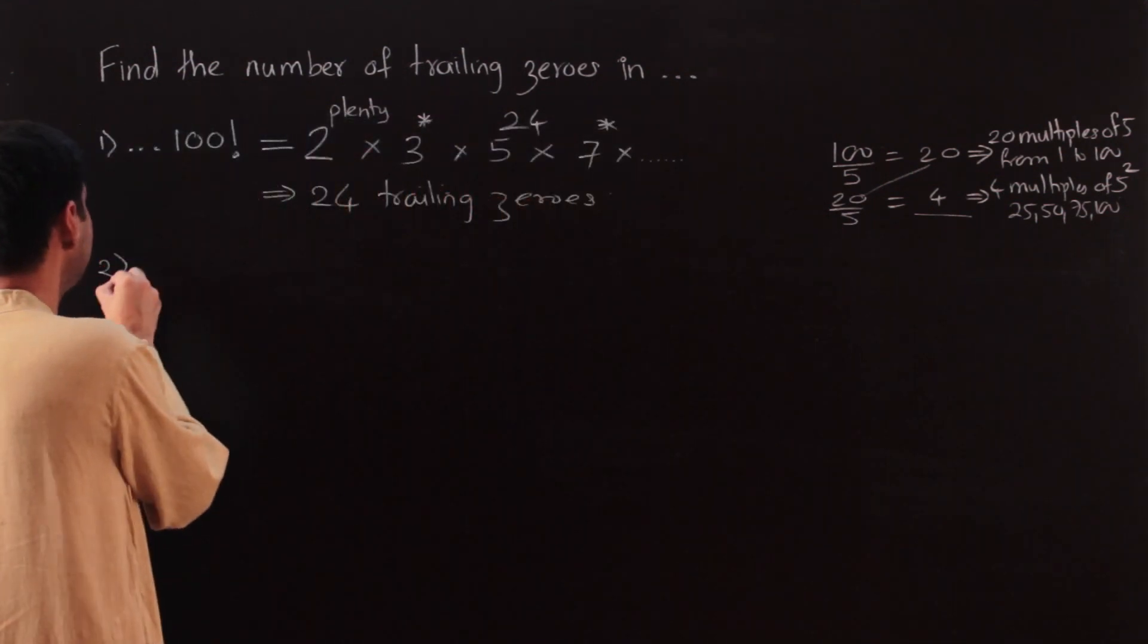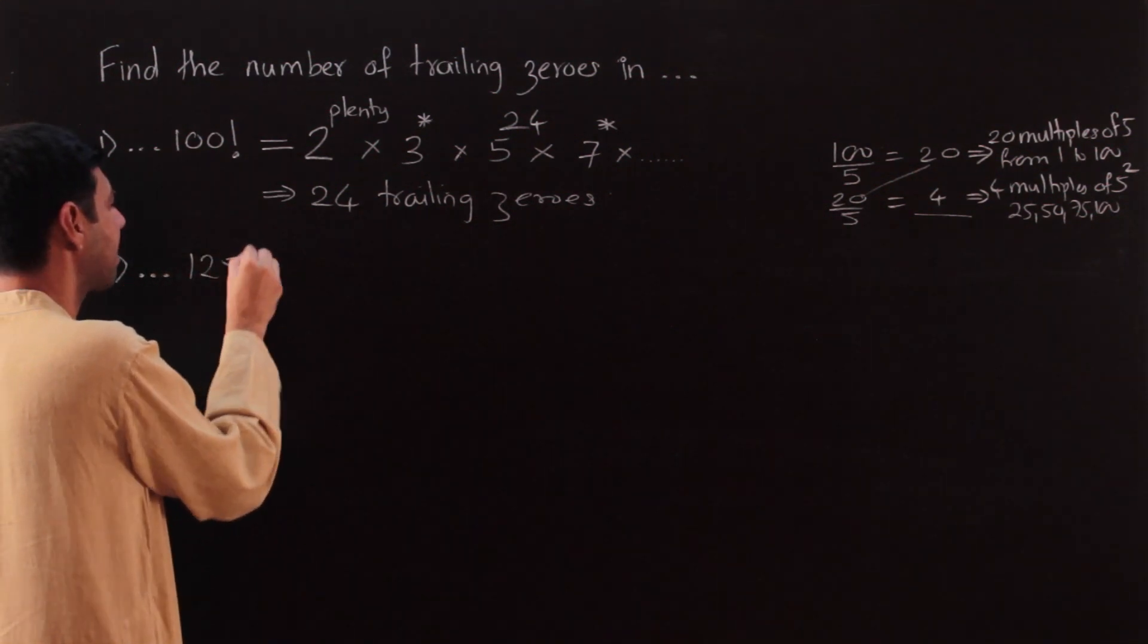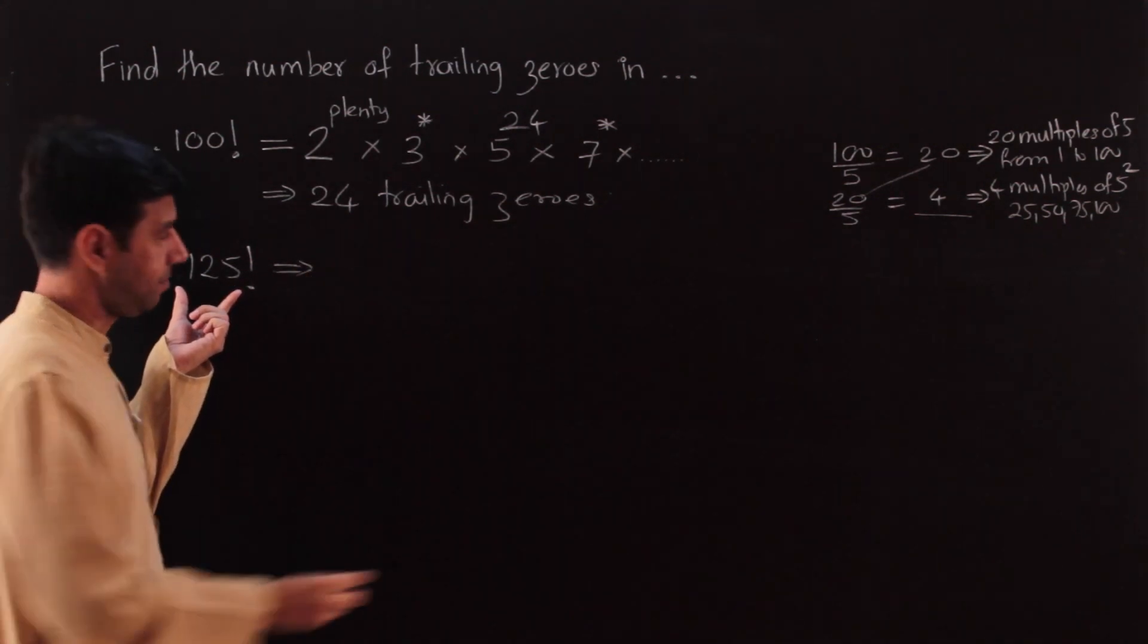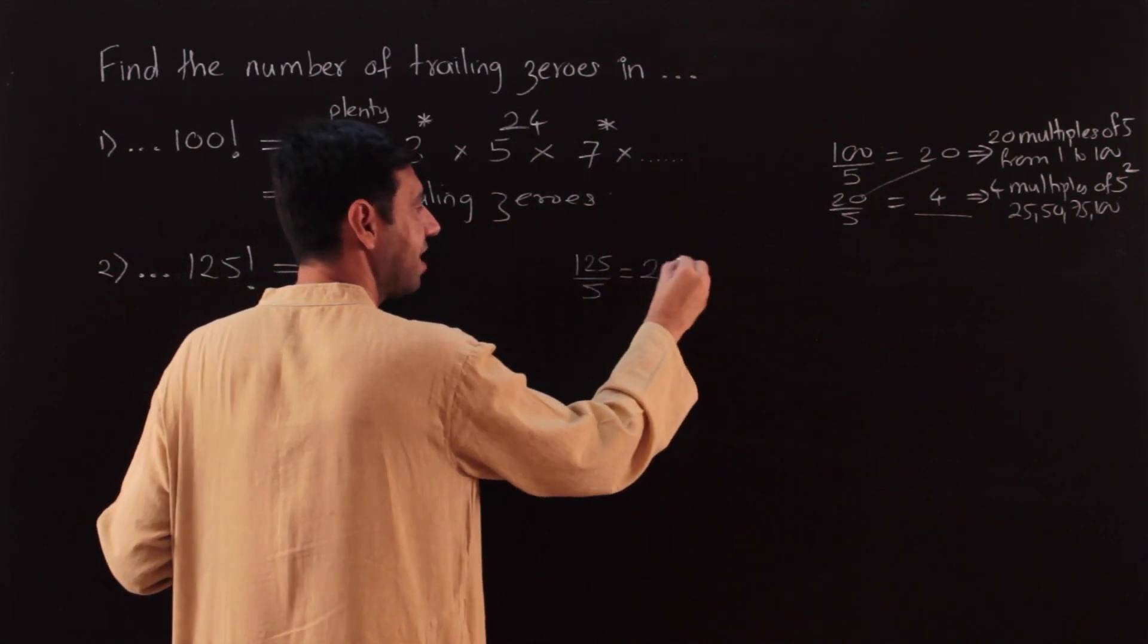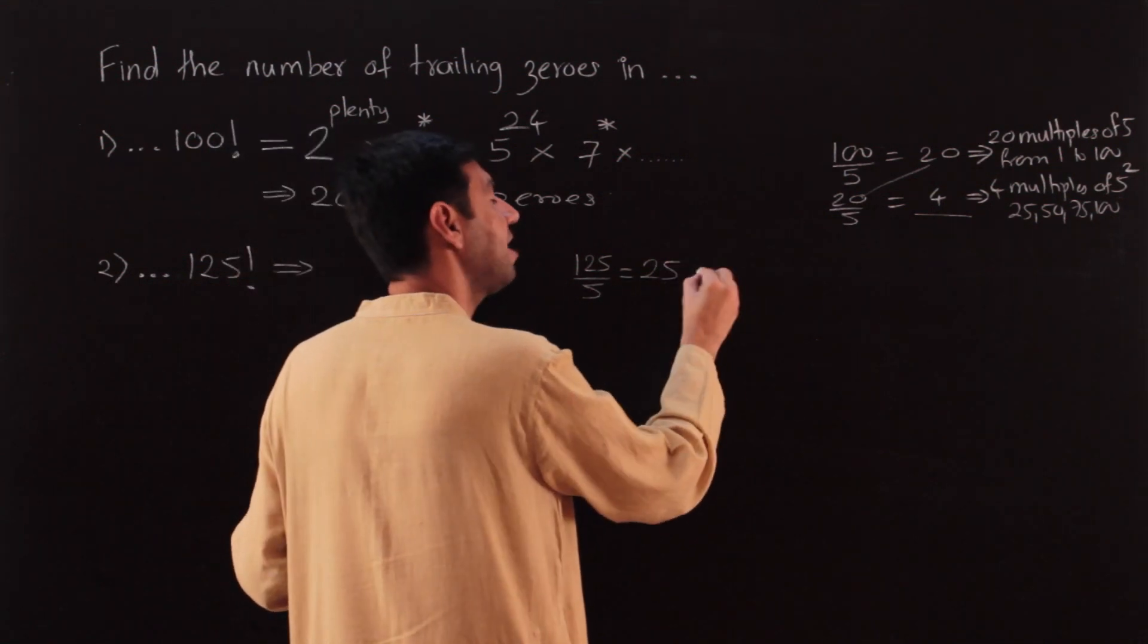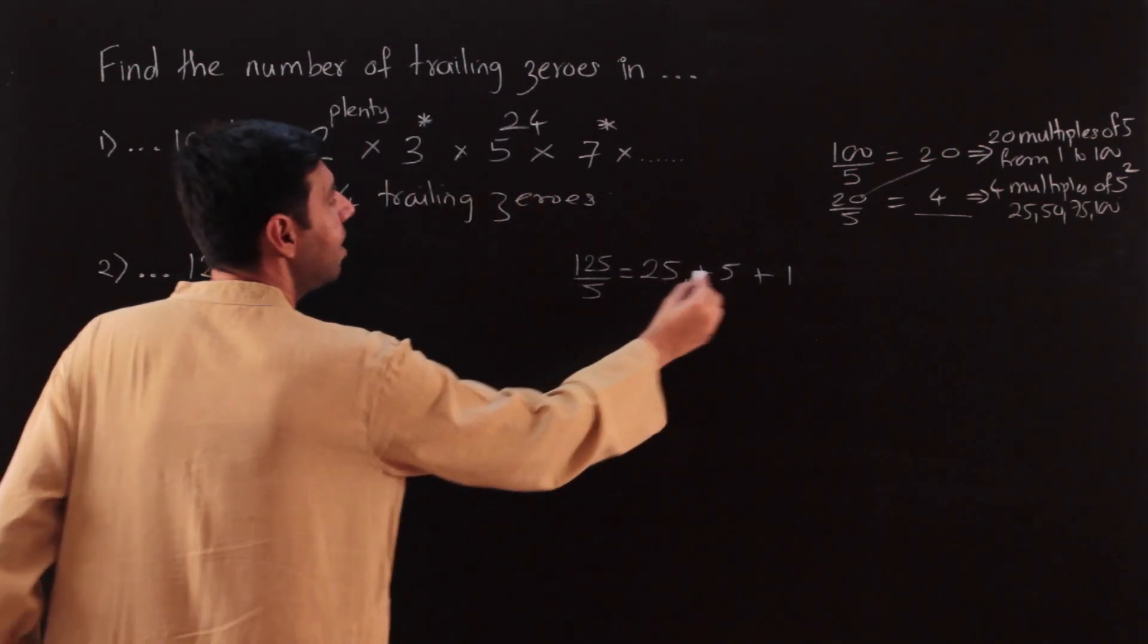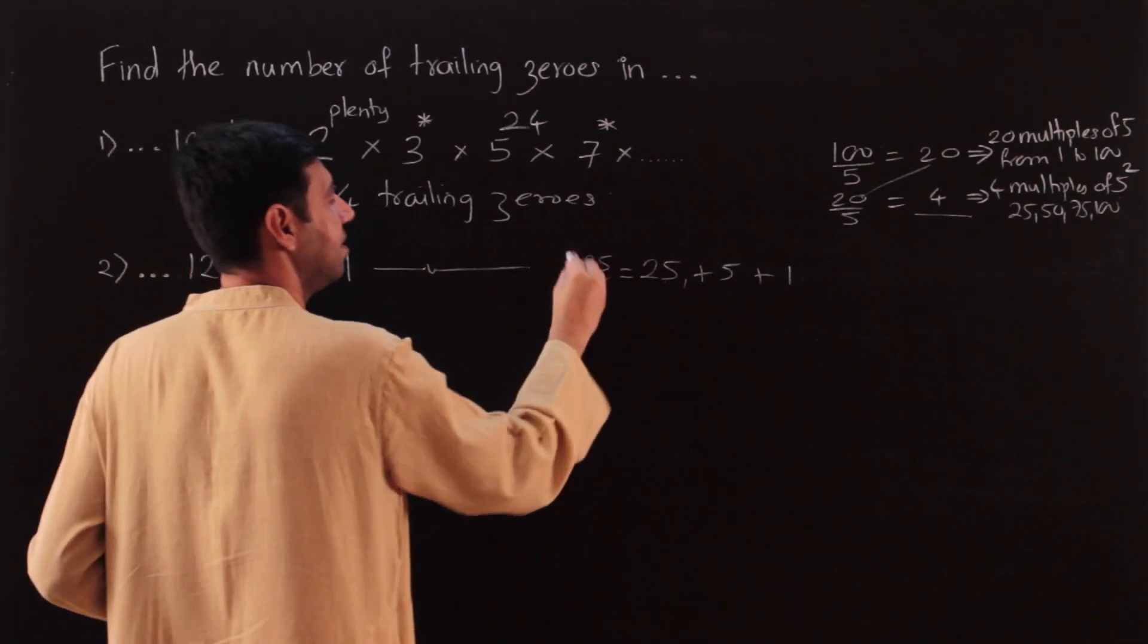Let's continue the question. How many zeros in 125 factorial? Let me just directly give out the answer. 125 by 5, you don't need to write this, I am doing this just to explain it to you. Once you get this, 25 by 5 is 5, 5 by 5 is 1. 1 is not divisible, so that is going to be 31 trailing zeros.